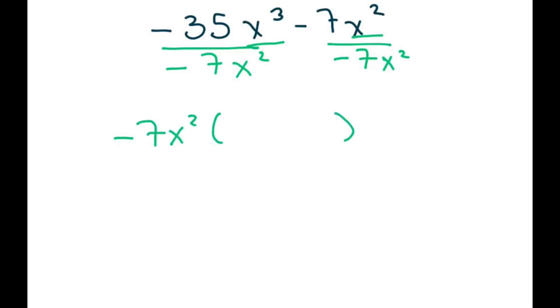Now two negatives make a positive. 35 divided by 7 is 5, x cubed divided by x squared is just x. Now here you have two negatives, so that's negative divided by negative is positive, and both of these cancel out. 7 divided by 7 is 1, x squared divided by x squared is 1, so you're going to get plus 1.